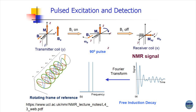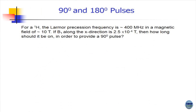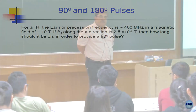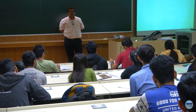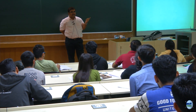This is what is done in the machines we use. Now it is time to calculate the time duration of a 90 degree pulse. For a proton, the Larmor precession frequency is 400 MHz in a magnetic field of about 10 Tesla. If B1 along the X direction is 2.5 × 10⁻⁴ Tesla, how long should it be on to provide a 90 degree pulse? Since Larmor frequency is directly proportional to magnetic field, by the unitary method you can find the Larmor frequency for B1. If you know the frequency you can work out the time for one 360 degree rotation, then divide by 4.